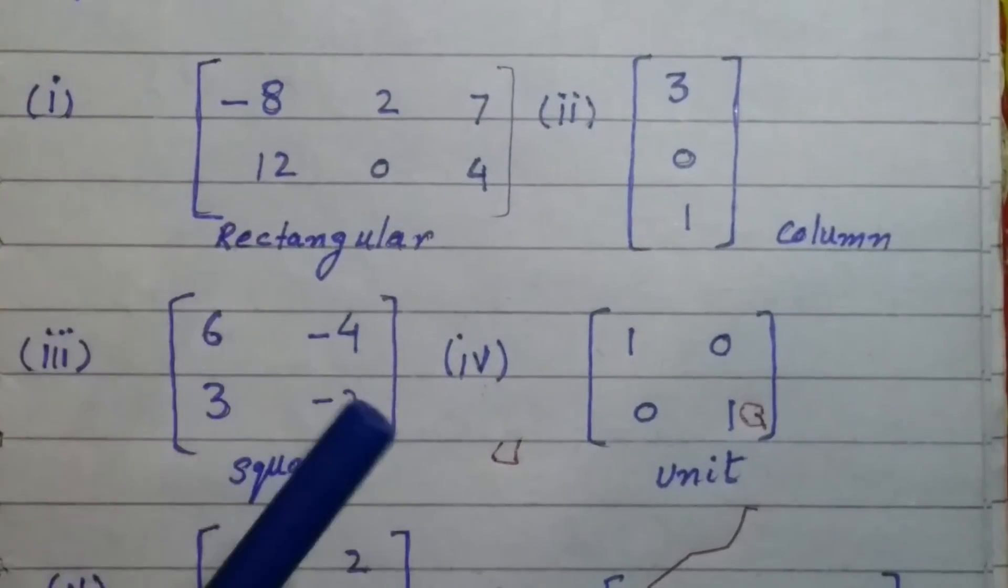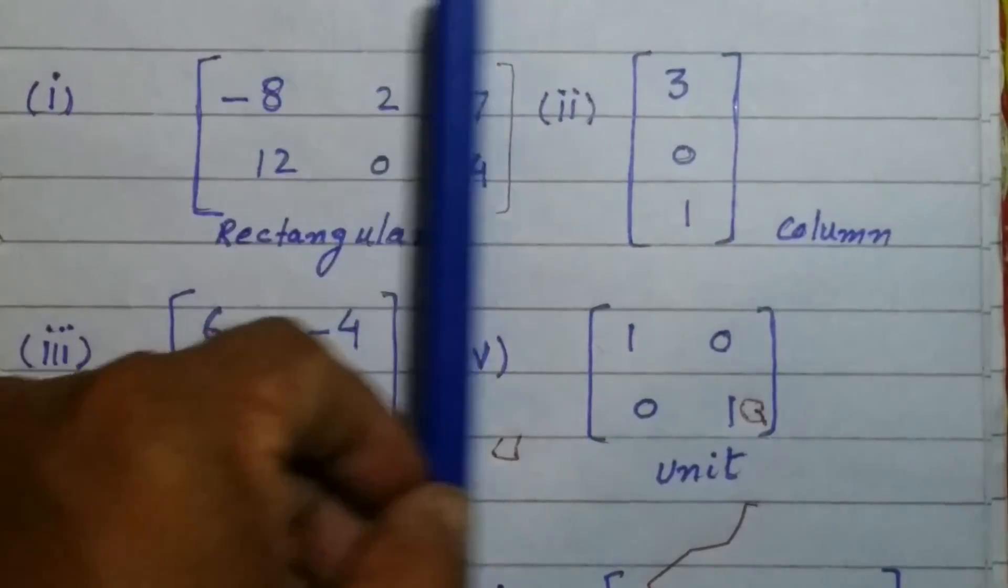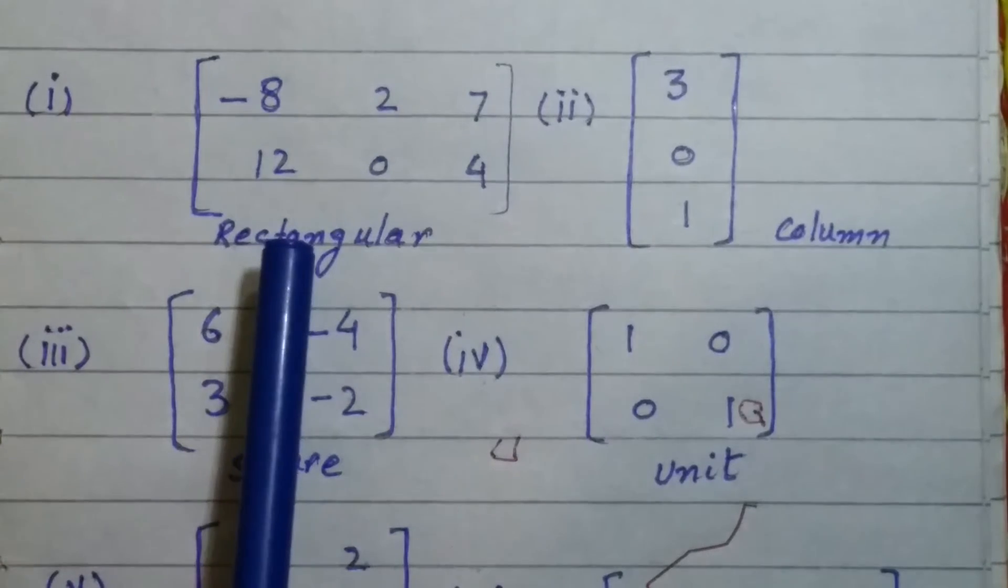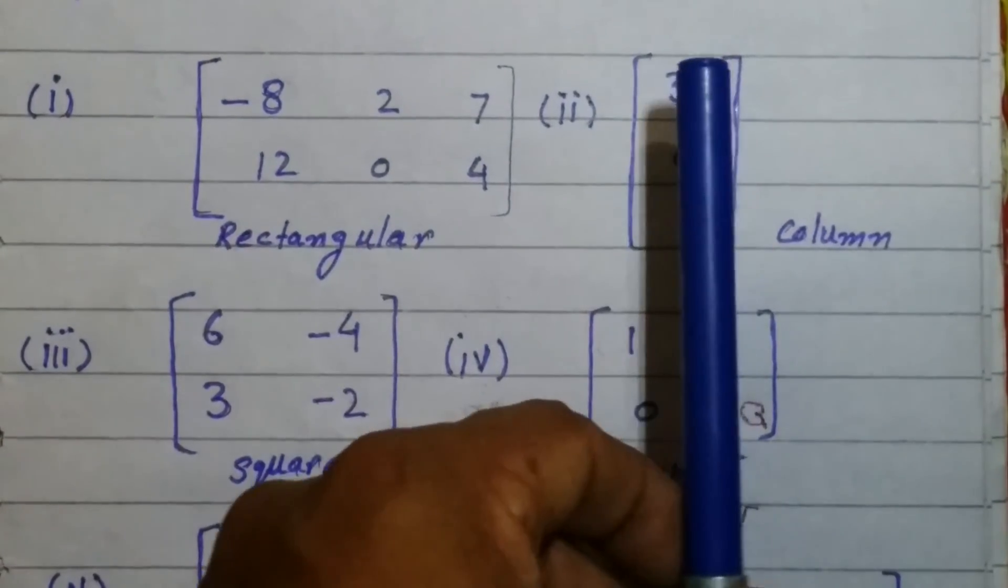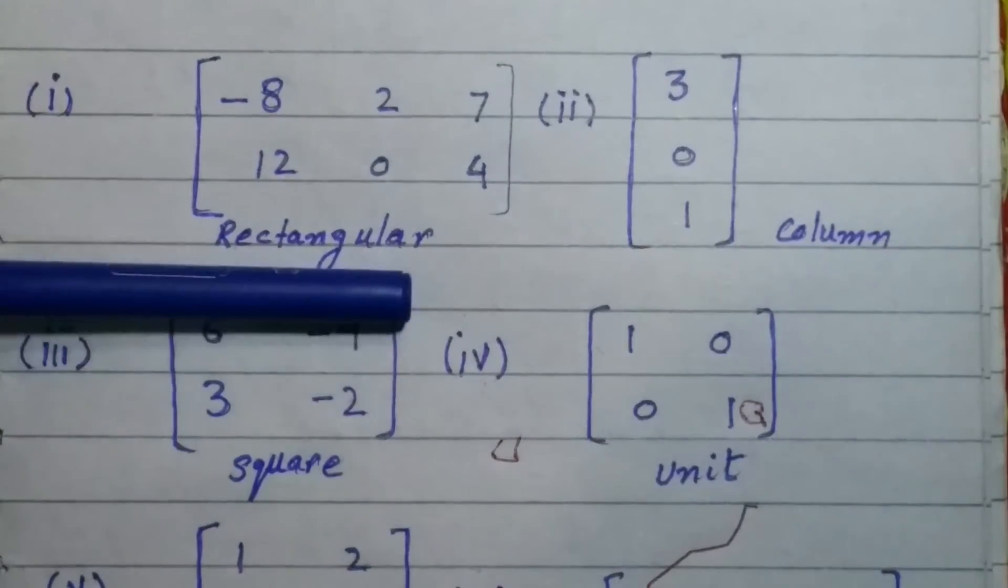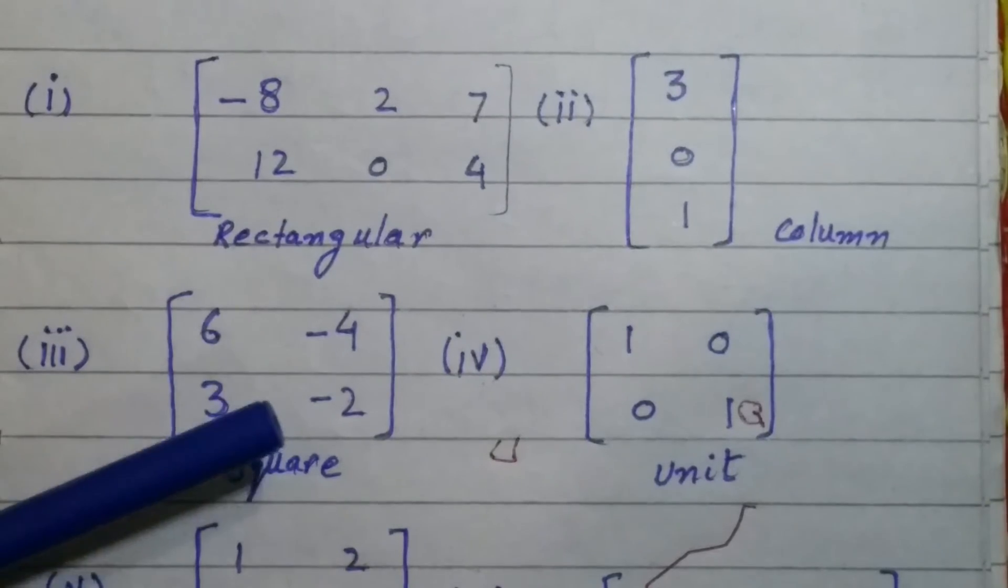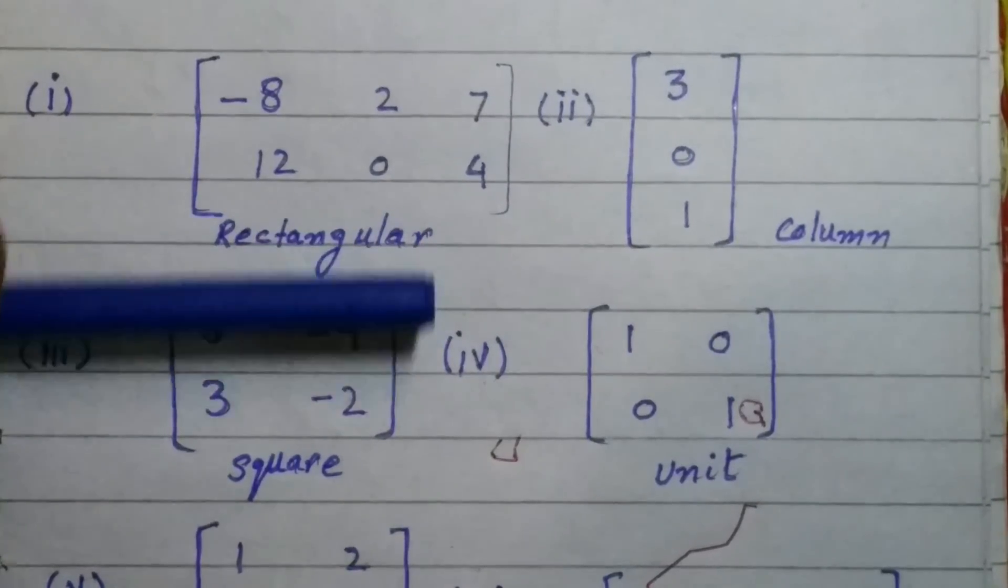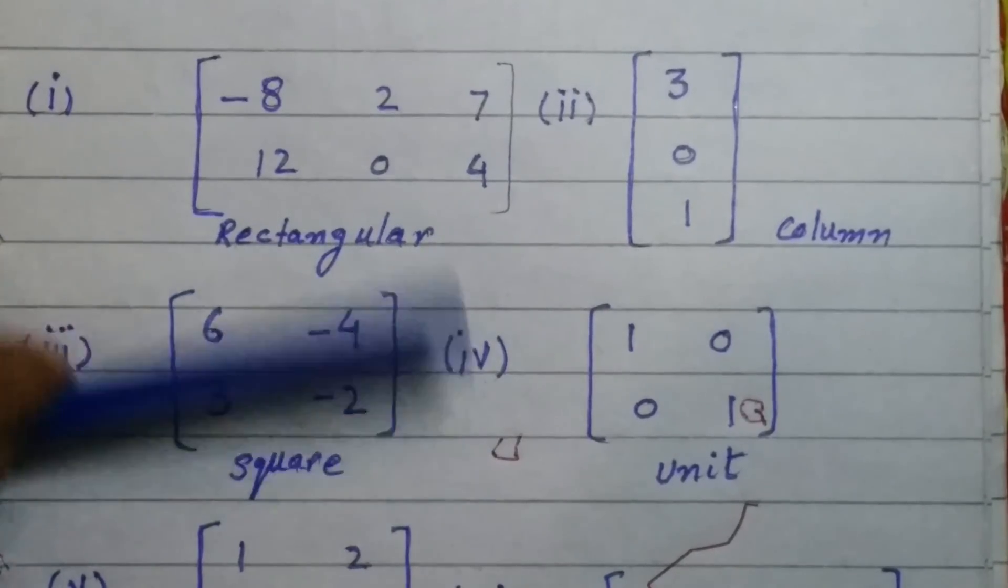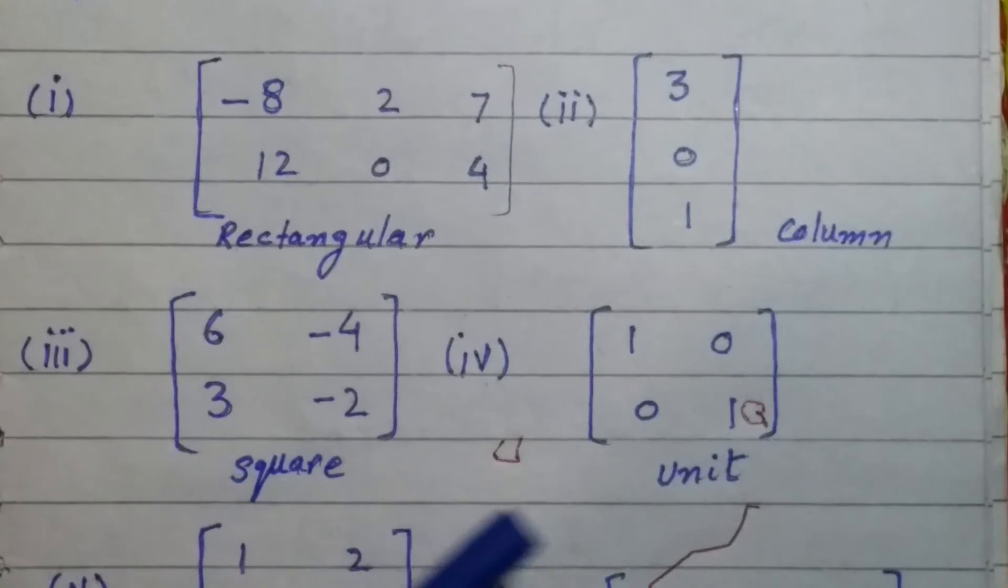Here rows are two and columns are three, a two by three matrix, so it is called a rectangular matrix. Here this has only one column so it is a column matrix. It has two rows and two columns. If the number of rows equals the number of columns, that is rows are equal to the columns, so it is called a square matrix.